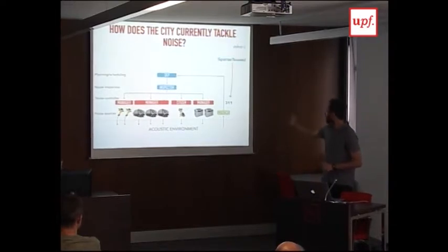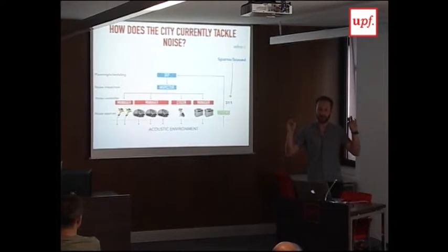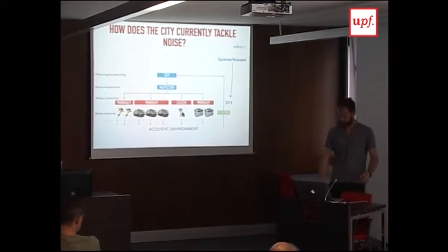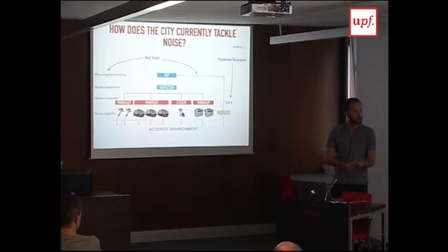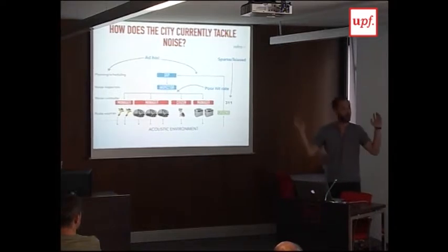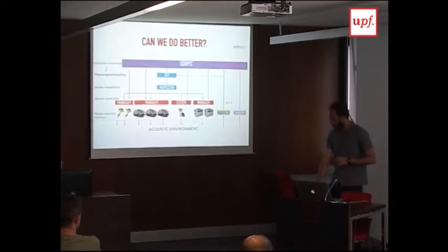The reporting system is sparse and biased — sparse because not everyone complains, and biased because studies show people living in richer neighborhoods tend to complain more than those in poorer neighborhoods. So 311 data is by no means a mirror of how much noise there actually is. The scheduling of inspections is also ad hoc — they get complaints and if someone is free they're sent out, but there's no strategy behind it. Consequently, they end up with a very poor hit rate because most of the time by the time they get there, the noise is gone and they can't issue a fine.